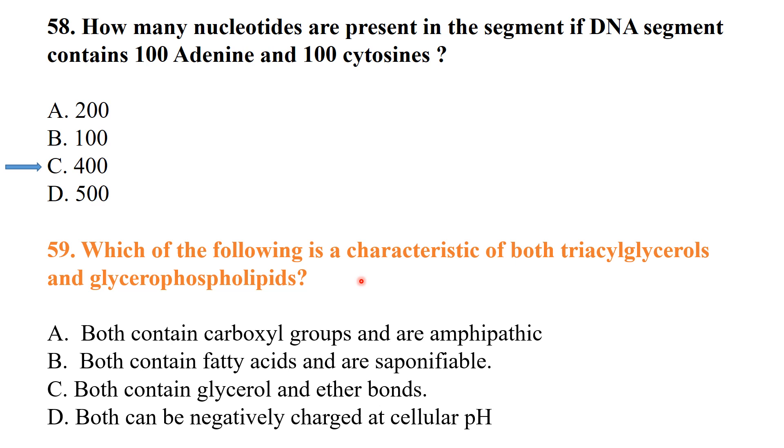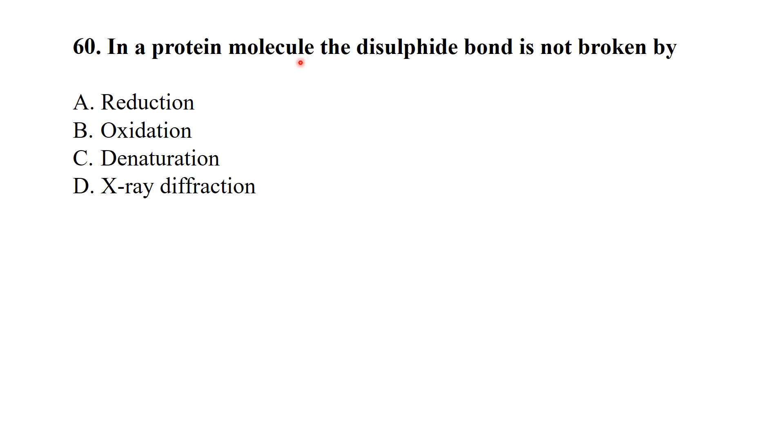Which of the following is a characteristic of both triacylglycerols and glycerophospholipids? Both contain fatty acids and are saponifiable. In a protein molecule, the disulfide bond is not broken by denaturation. Genetics means heredity, variation, and both A and B is the meaning of genetics.